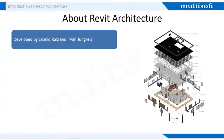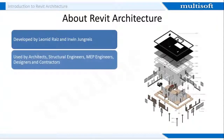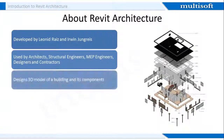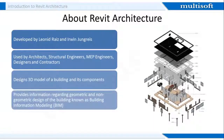Autodesk Revit Architecture is a modeling software for architects, structural engineers, MEP engineers, designers, and contractors. It allows users to create 3D architectural models and access building information from the building's model database.